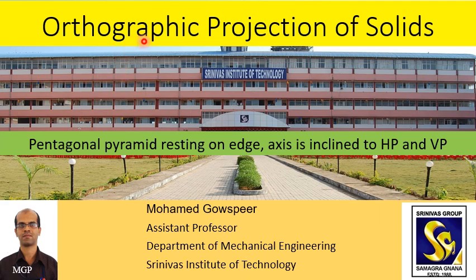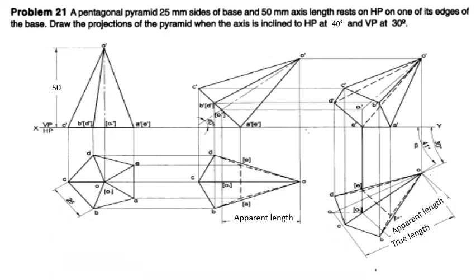Hello everyone, today we learn orthographic projection of solids. We see the example for the condition: a pentagonal pyramid resting on an edge, with the axis inclined to HP and VP for both reference planes. This is problem number 21: a pentagonal pyramid with 25 mm sides of base.